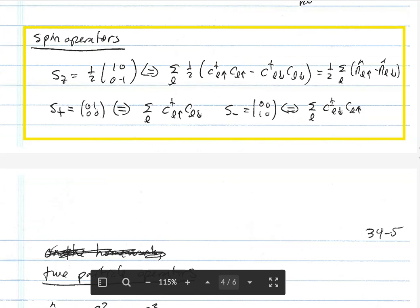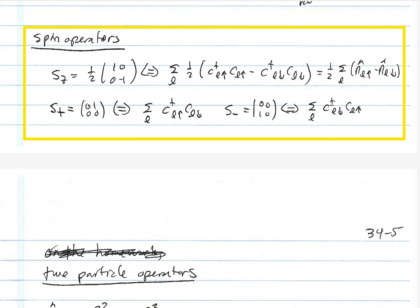Now let's look at the spin operator using Pauli matrices, with S_z = one-half [[1,0],[0,-1]] in the Gottfried notation with no h-bar. In second quantized form: S_z = one-half sum over L of (c†_{L,up} c_{L,up} − c†_{L,down} c_{L,down}) = one-half sum over L of (n_{L,up} − n_{L,down}). The S+ and S− operators correspond to sum over L of c†_{L,up} c_{L,down} and sum over L of c†_{L,down} c_{L,up} respectively. S+ takes something in the spin-down state and replaces it with a spin-up state without changing the spatial state — exactly what S+ should do. S− does the opposite.